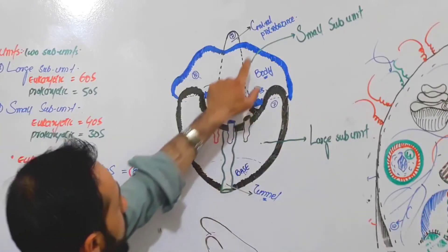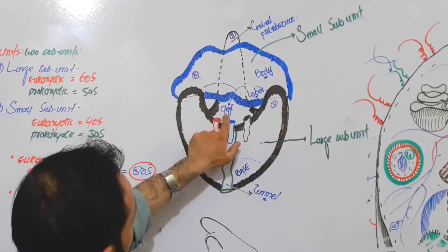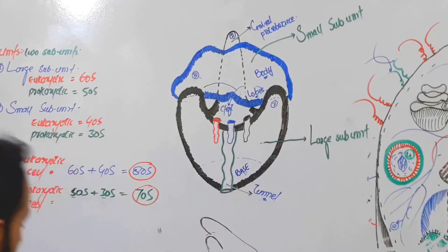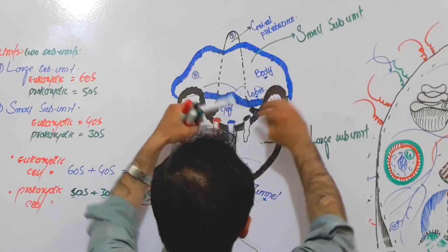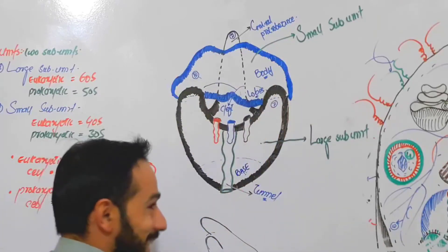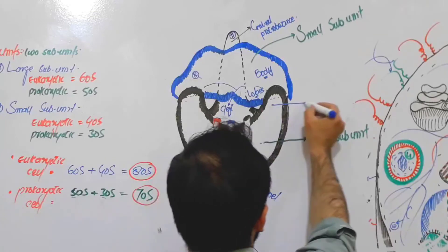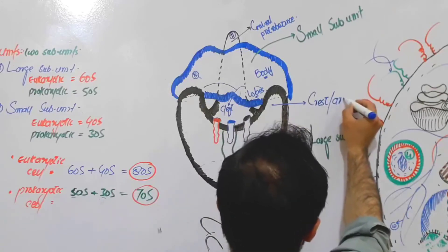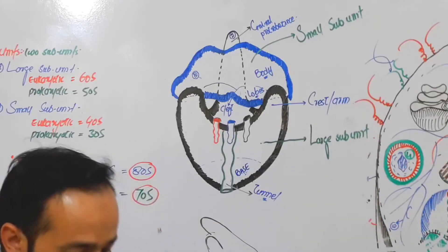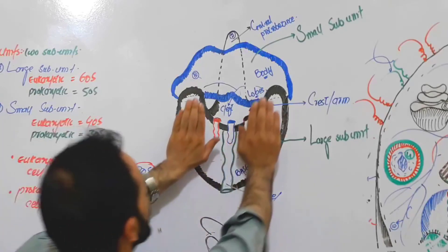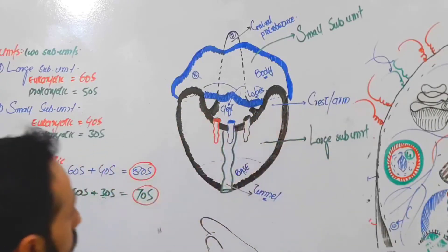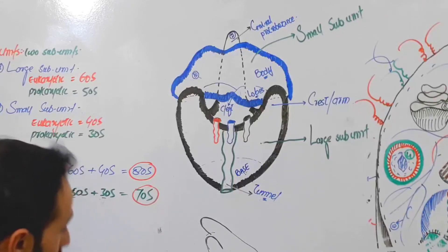So we know there is the base, the central protuberance, the body, the cleft, the tunnel, and the lobes. Now the seventh part: the large sub-unit extends upward on both sides — these two parts are called the crests, or arms, of the ribosome. These are the two arms which hold the small sub-unit in place.